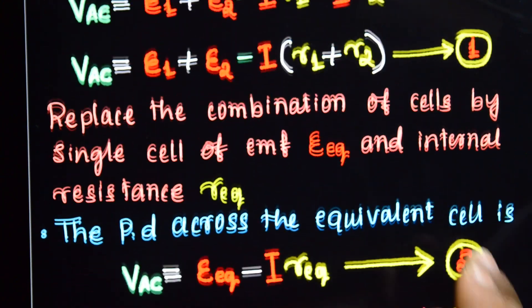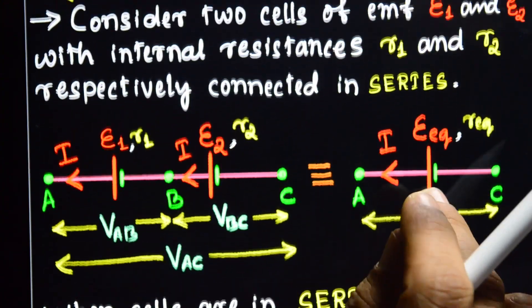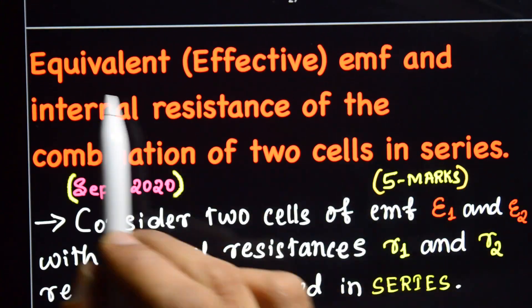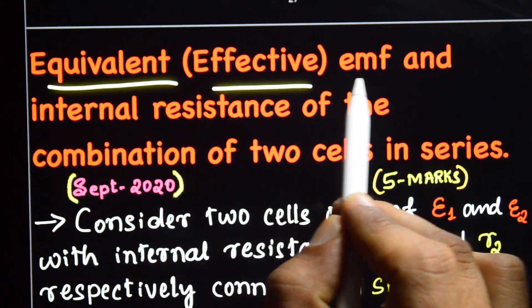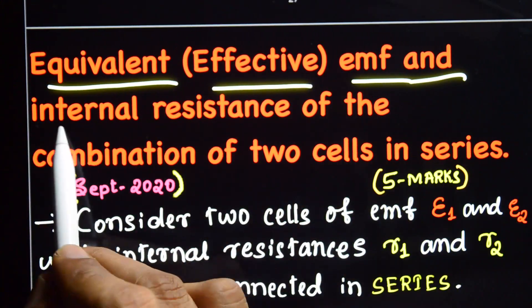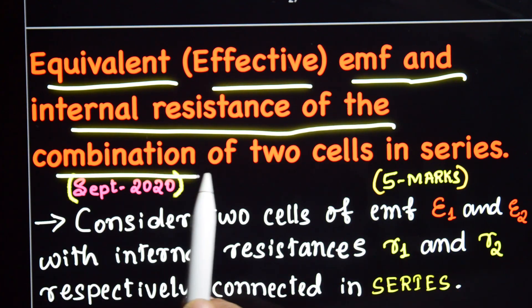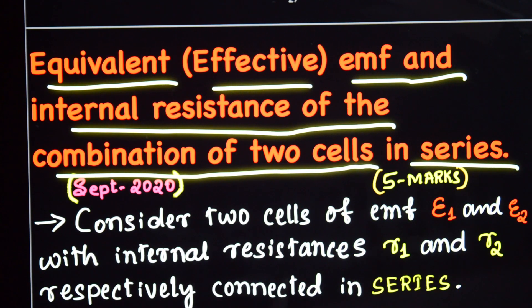This is your 3 or 5 marks topic: equivalent or effective EMF and internal resistance of the combination of two cells in series.